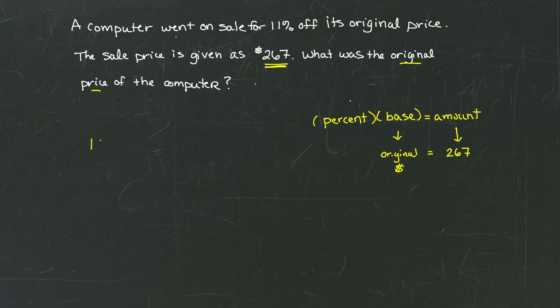What does that mean? Well, if we took the original 100%, which is what the original price is, 100% of its cost, and we subtract off that discount of 11%, that tells us that the new computer is actually sitting at 89% of the original price.